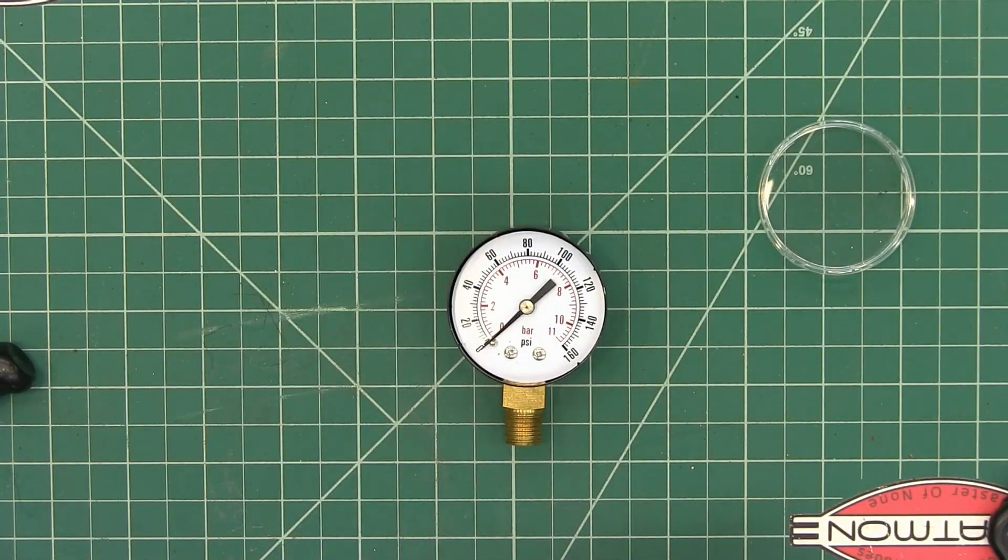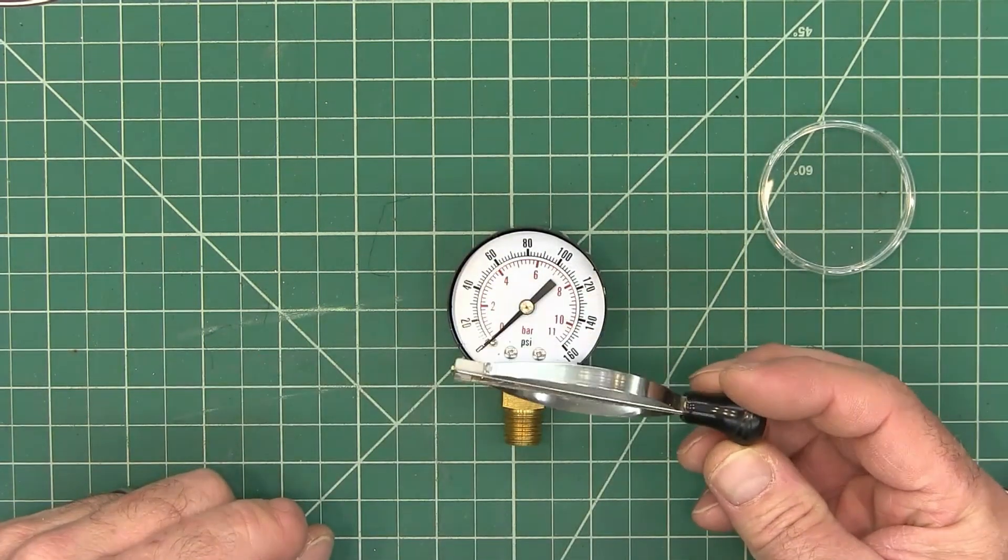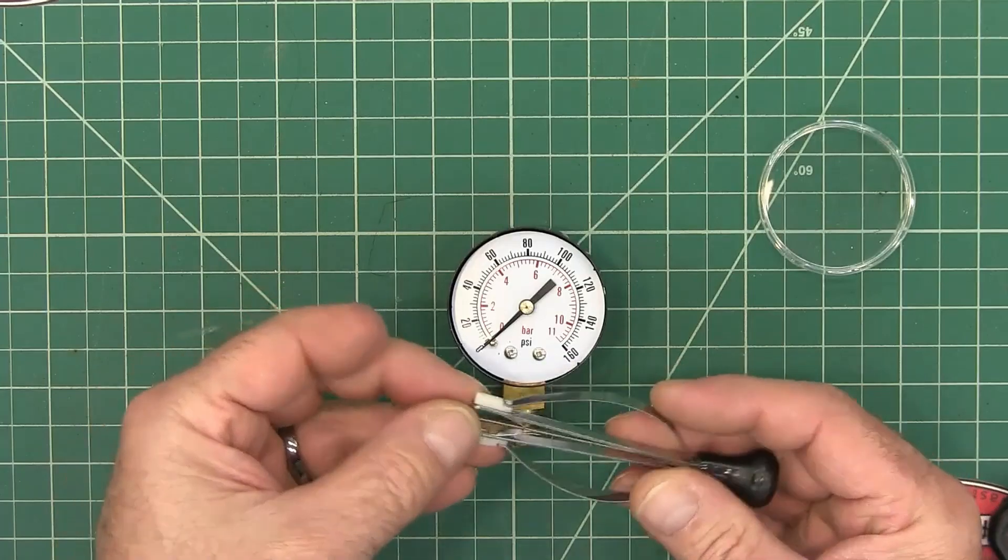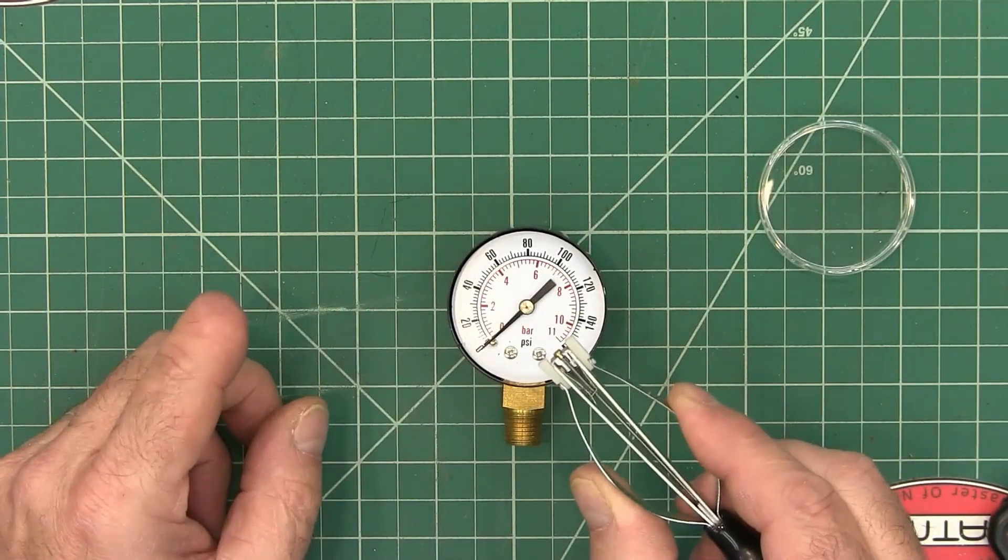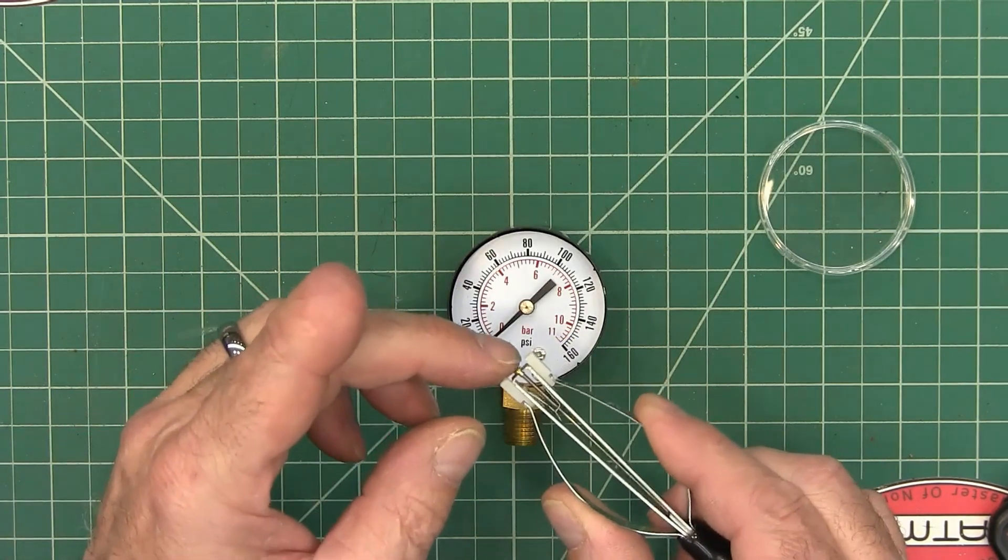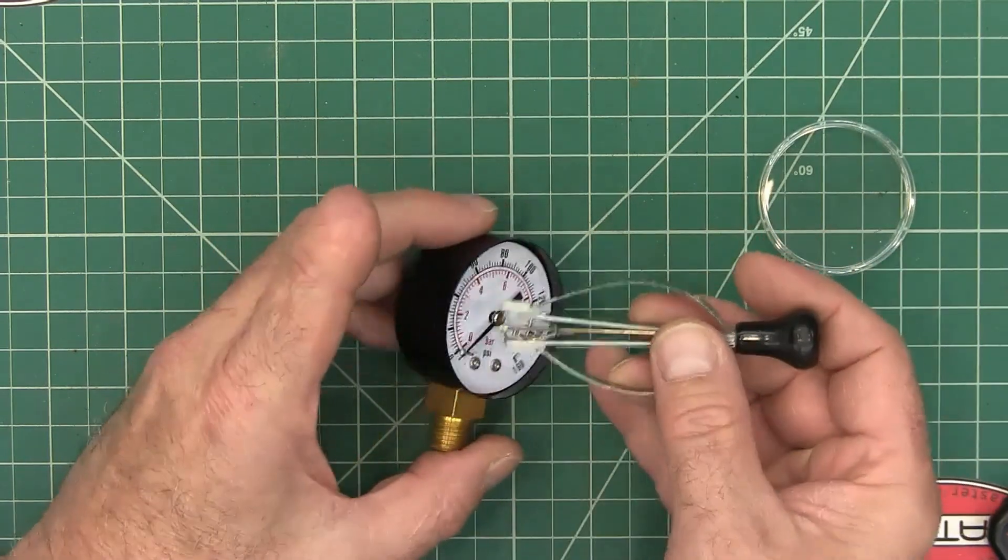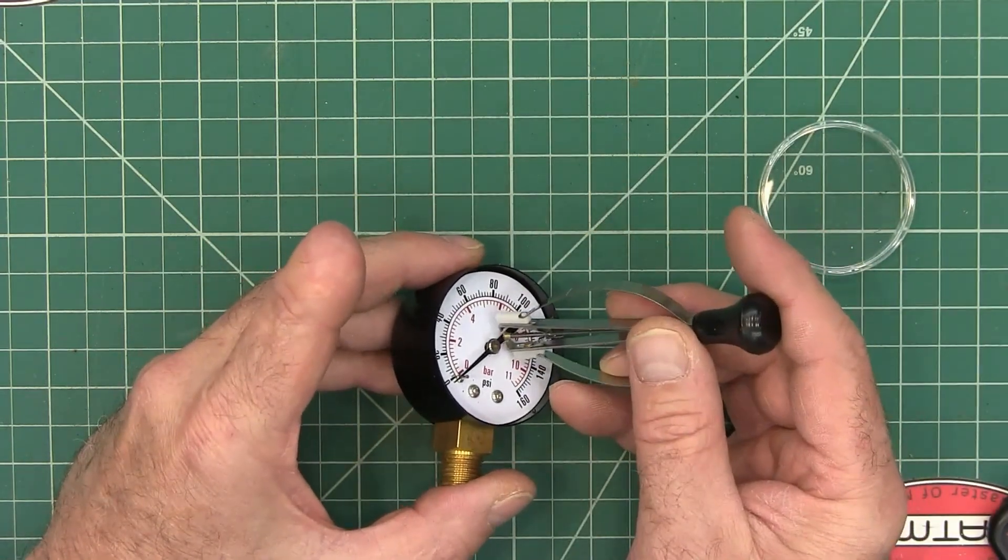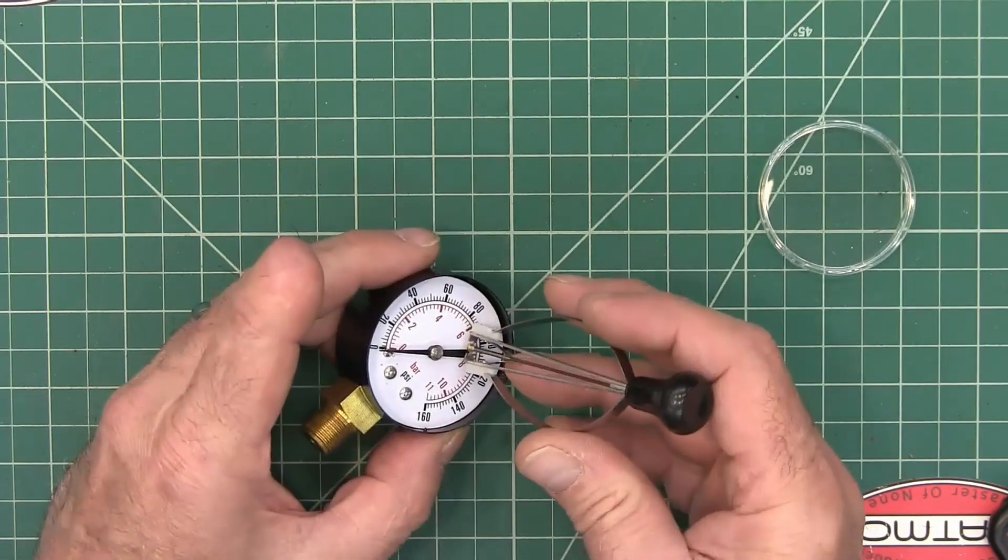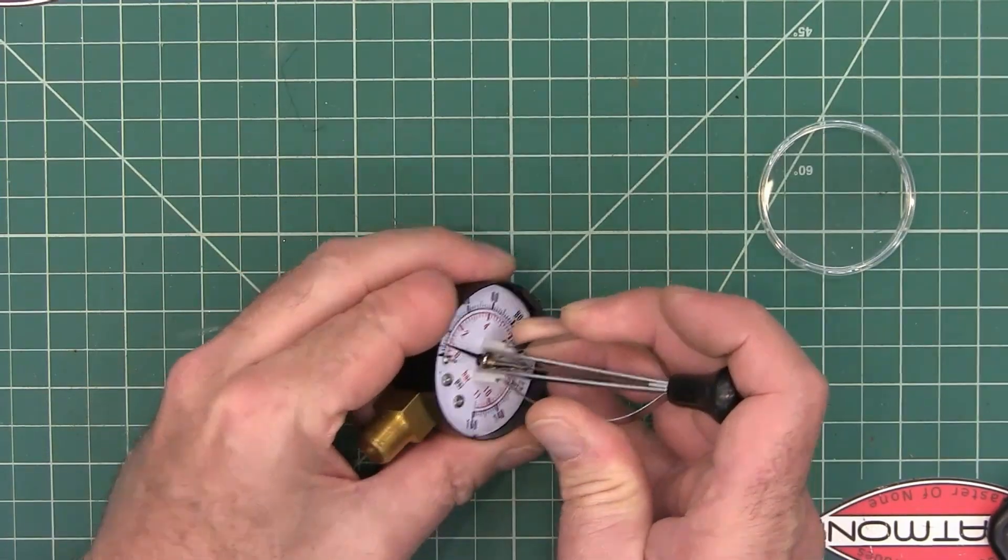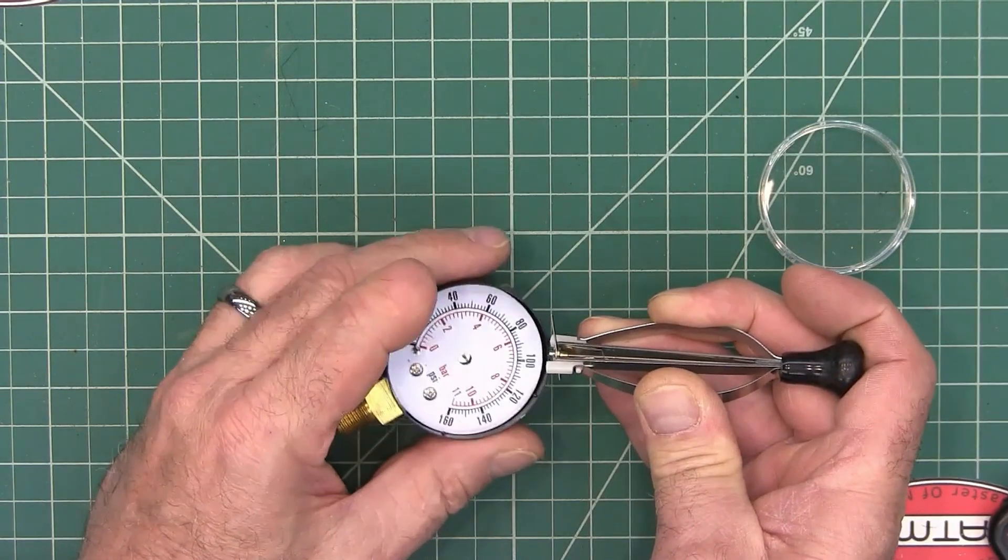But anyway, to get this thing apart, I bought this little thing on eBay and it's a needle remover. You squeeze this and it's supposed to push down and push it off. I didn't really find that part of it useful, but basically you just stick it on there like that. What it was helpful to be able to do, slide it on there like that and then you can pull it straight up and off.